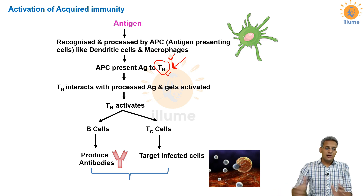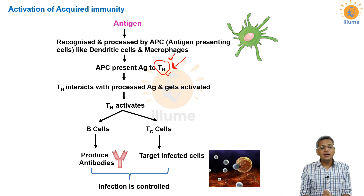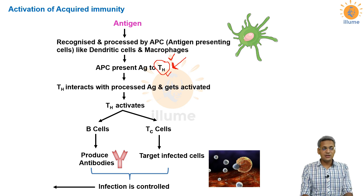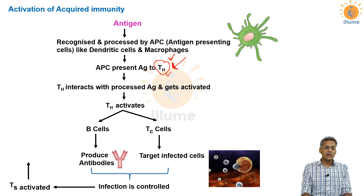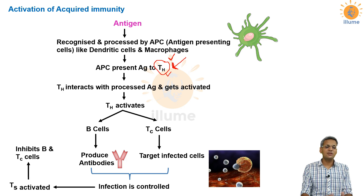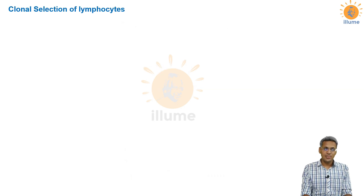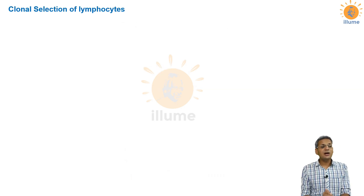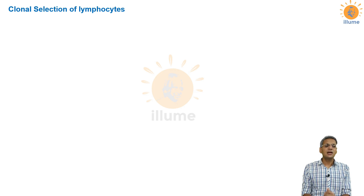Once infected cells are targeted and antibodies are produced, the infection comes under control. When the infection is under control, T suppressor cells are activated and inhibit B cells and TC cells, since the immune work is done. Now, a very important topic: clonal selection of lymphocytes.